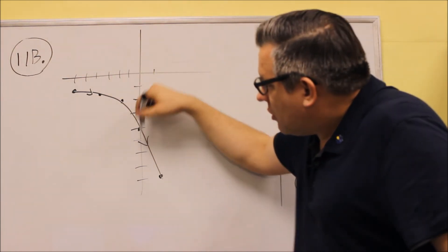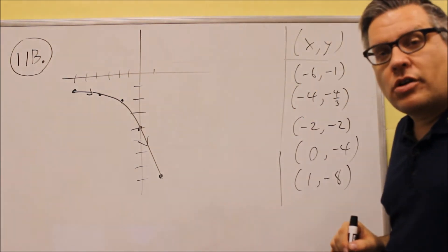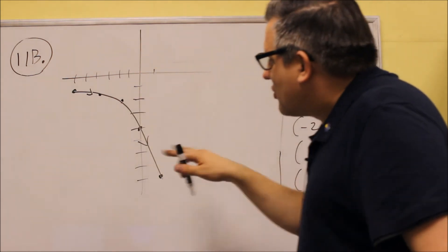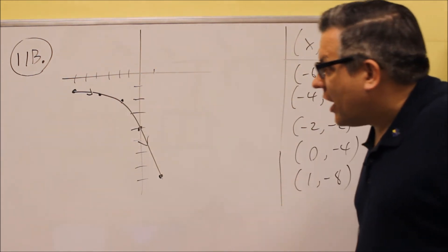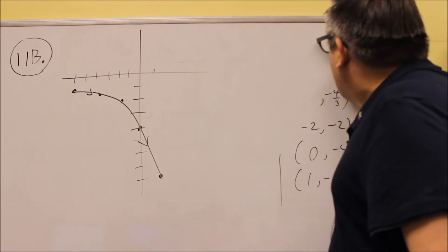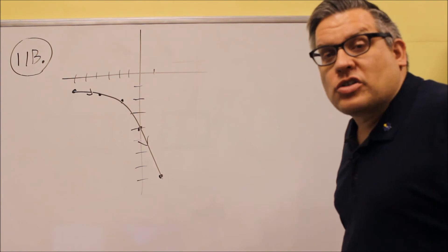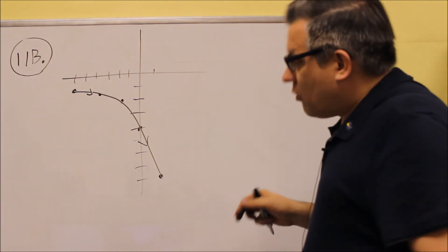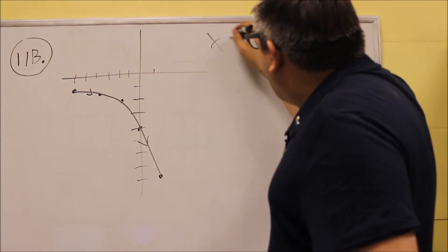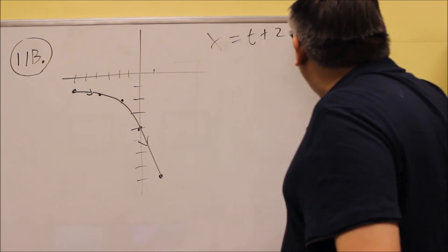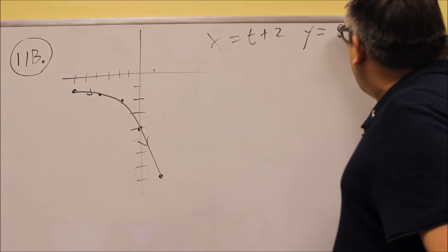And don't forget to put the directional arrows that need those on there for your answer. So this is going to be the correct graph. So now, it asks for us to eliminate the parameter, it's also the same thing as writing the rectangular equation. Okay, now originally for this we had x equals t plus 2 and we have y equals 8 over t.